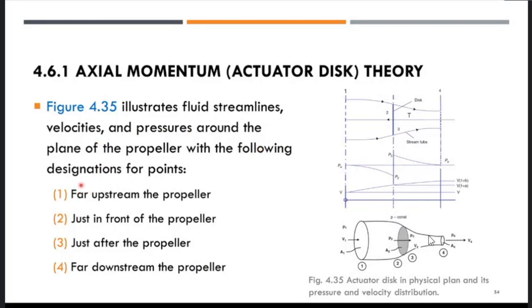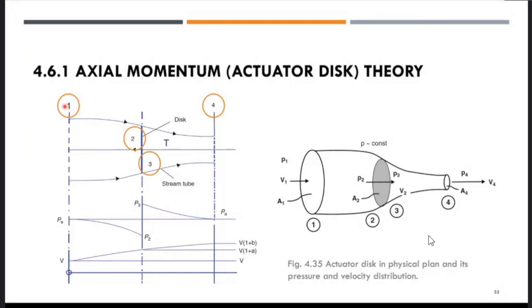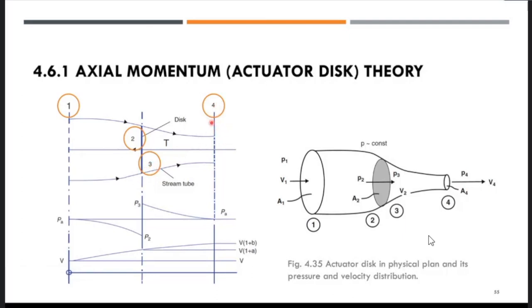Looking at figure 4.35: station 1 is far upstream of the propeller; station 2 is just in front of the propeller (the actuator disc, shaded gray); station 3 is just after the propeller; and station 4 is further downstream. The velocity profile shows velocity increasing from entry to exit, and the pressure profile shows the pressure change as flow enters and exits the stream tube.